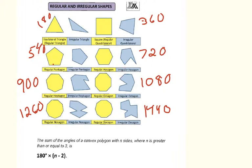The sum of angles in a hexagon is 720 degrees, in a heptagon is 900 degrees, in an octagon is 1,080 degrees, in a nonagon is 1,260 degrees, and in a decagon is 1,440 degrees. I got all of these numbers using this formula.